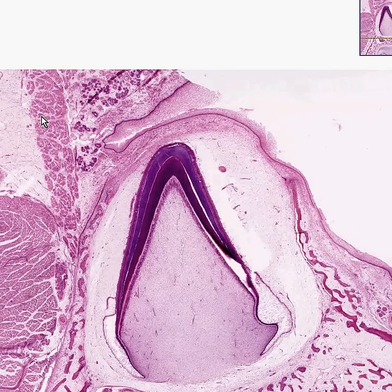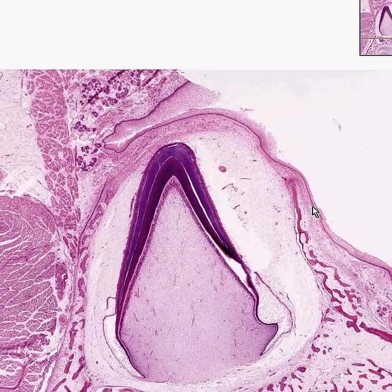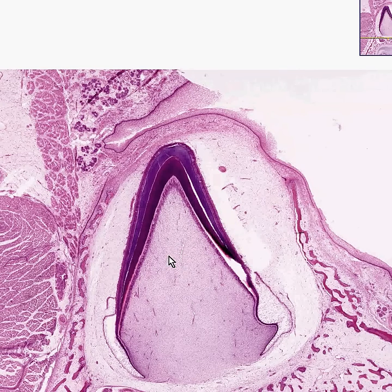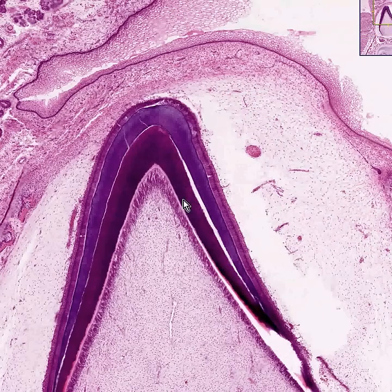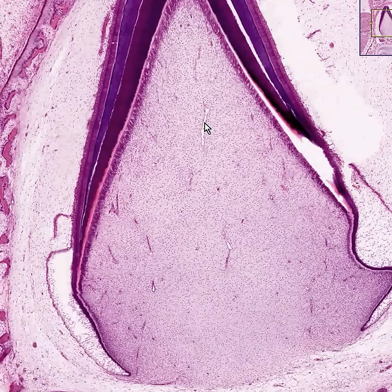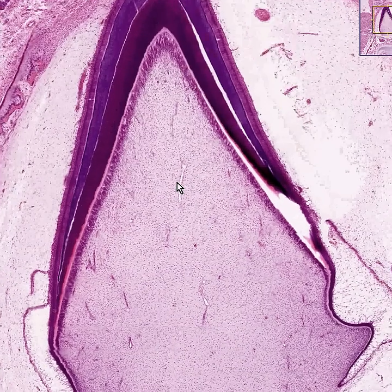This is an erupting tooth and it is beautiful because it demonstrates everything. First of all, once again, you can see the overlying squamous mucosa. Secondly, you can see a good degree of development in the alveolar bone. Thirdly, you can see a nice loose vascular pulp cavity of the tooth, in which you can see basically a loose primitive-looking connective tissue and a lot of blood vessels, which you see along here.